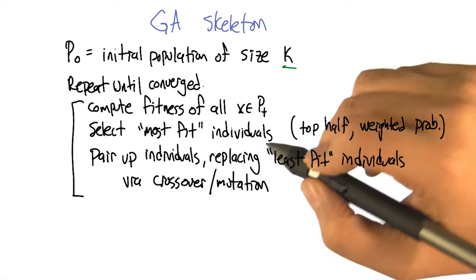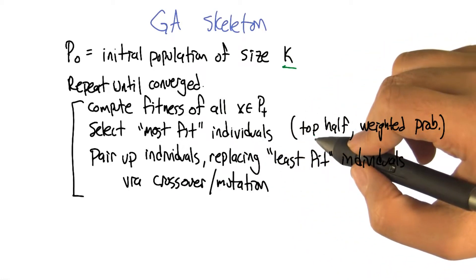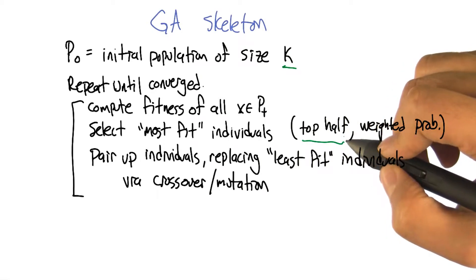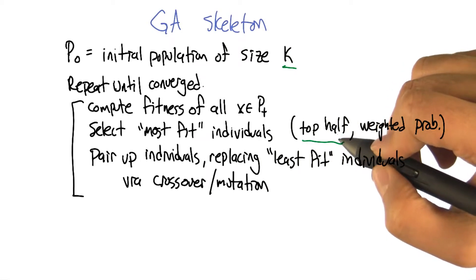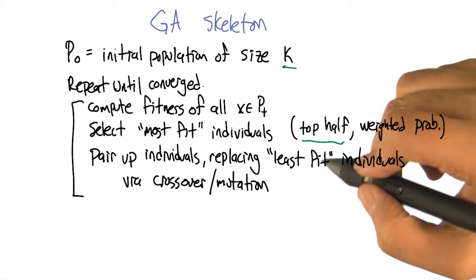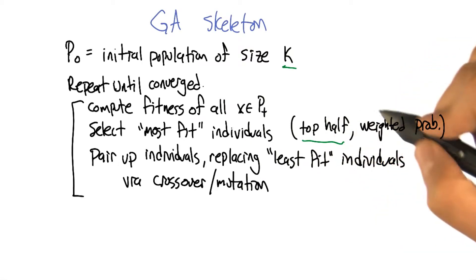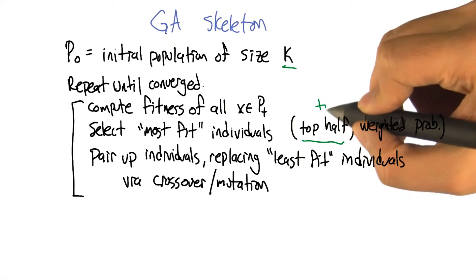So that's definitely one way to do it, where what happens is you take the, say, top half of the population in terms of their scores. And we declare them to be the most fit and everybody else to be the least fit. But there's other ways you can do it as well. This is sometimes called truncation selection.